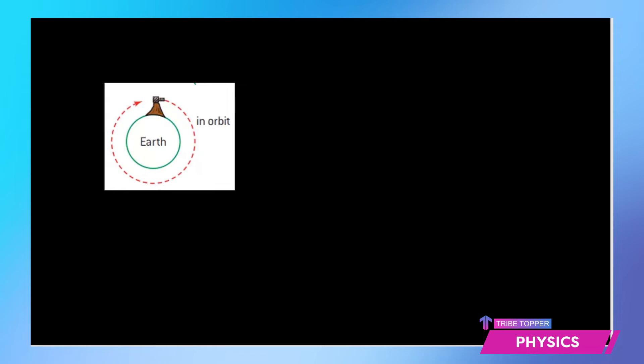So let us find out what will be the expression for this orbital velocity. Now when anything goes into an orbit that means it is in a circular path. So it is experiencing a centripetal force which is mv² by r. So this is the centripetal force experienced by the satellite.